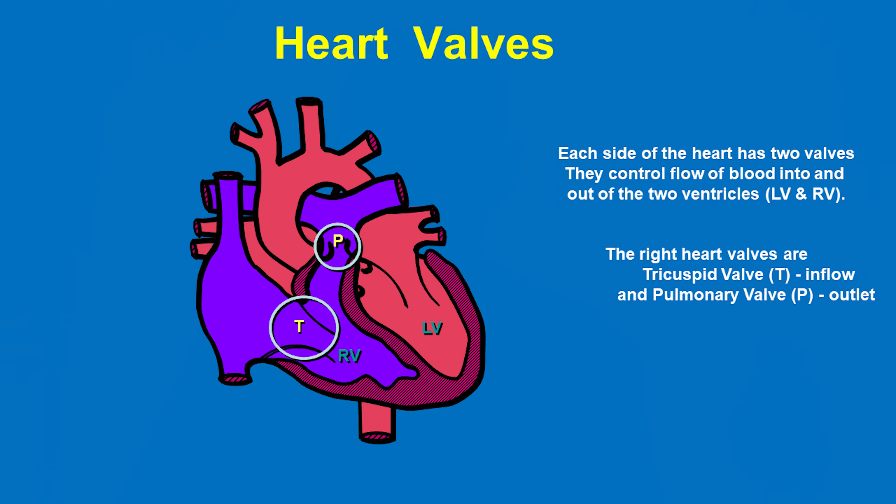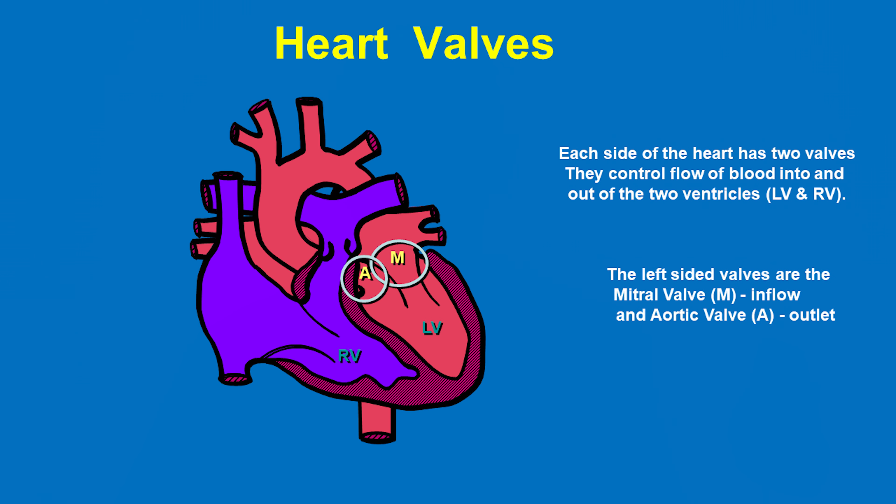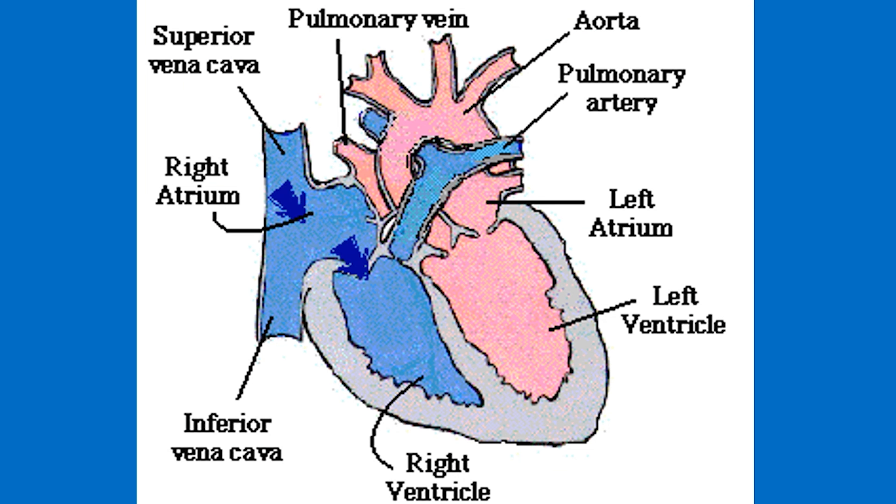As mentioned, there are four valves in the heart. Two valves are on the right side of the heart: the tricuspid valve and the pulmonary valve. The other two valves are on the left side of the heart: the mitral valve and the aortic valve. The function of the heart valves is to maintain blood flow through the heart, keeping blood moving efficiently in one direction, as shown again in this animation.